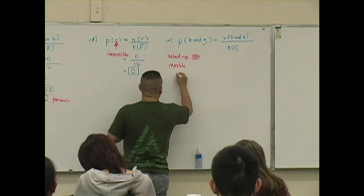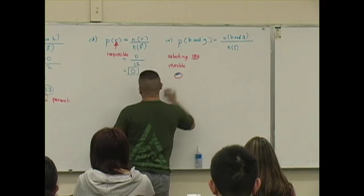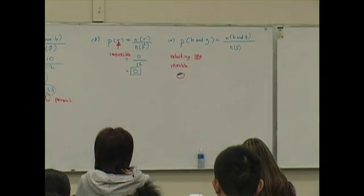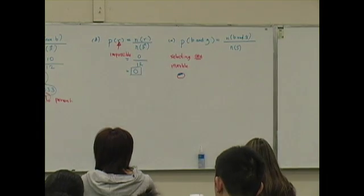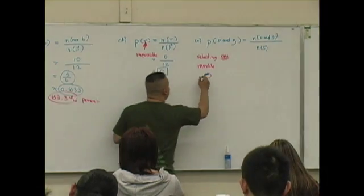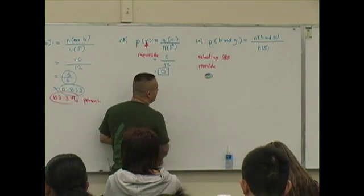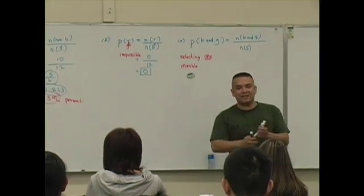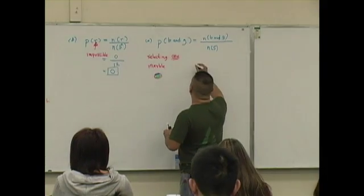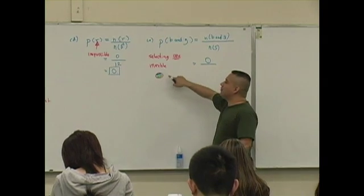Supposed to be blue and green, is that true? So what does that mean? Good, it means that there are zero marbles that are both blue and green.